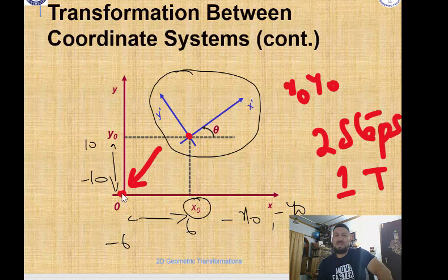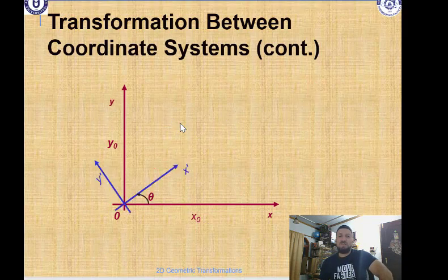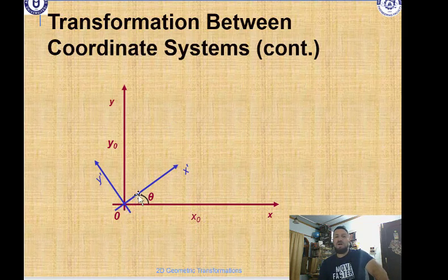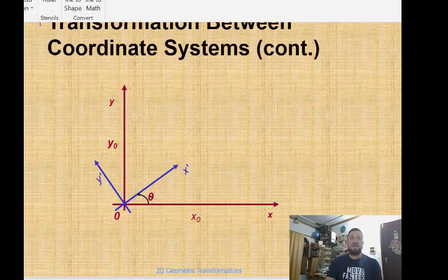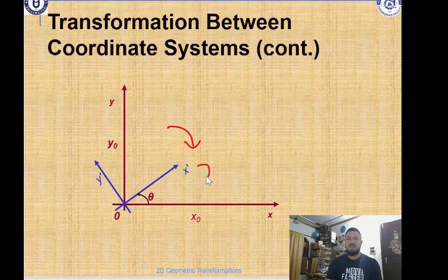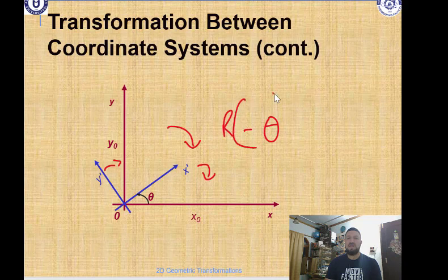By translating minus x₀ and minus y₀, the local coordinate system's origin coincides with our scene coordinate origin. Now, after translation, we rotate. We can rotate clockwise or anti-clockwise. Here we rotate clockwise, so we rotate this line so that it coincides with our x-axis. The angle is theta, and because it's clockwise, theta is negative.